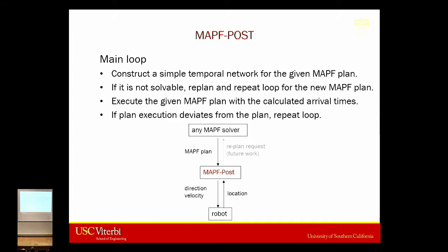Here's how the approach comes together. For a given MAPF plan, we construct a simple temporal network. If it's not solvable, we go to the planner for a new plan. If it is solvable, we have arrival times at all locations, which we use to determine the speeds robots should move. We send this to the robots. If plan execution deviates, we repeat: reconstruct the simple temporal network, and if it's still solvable, we do not need to replan — we keep executing the plan with updated velocities.